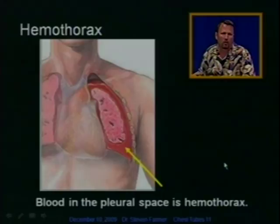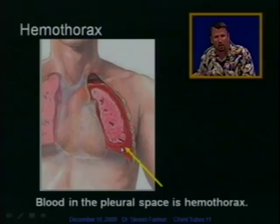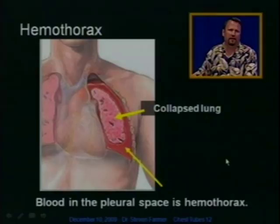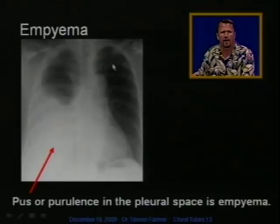Hemothorax is blood in the pleural space. Here we see blood in the pleural space, and the lung has collapsed somewhat due to the blood. We can have blood and air in the pleural space as well. Here's a chest X-ray showing the normal inflated lung — air is black, dense structures are white. Since your lungs are full of air, they appear black on X-ray.